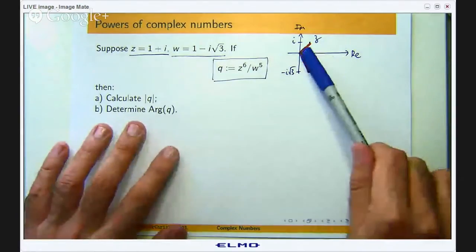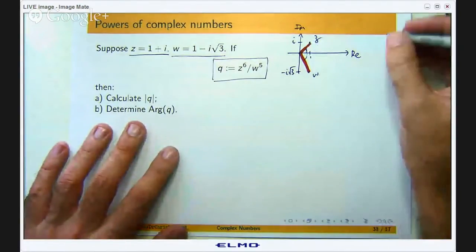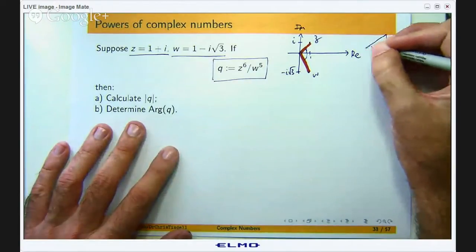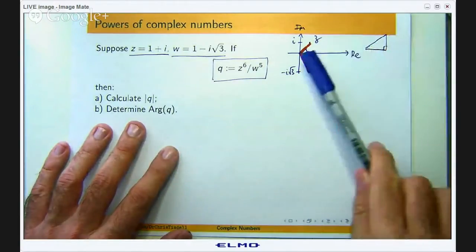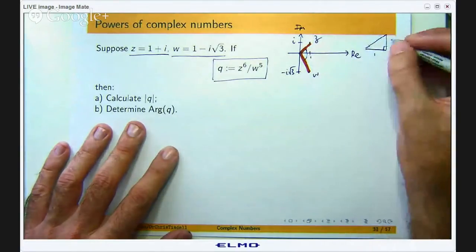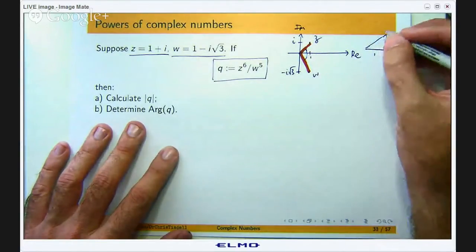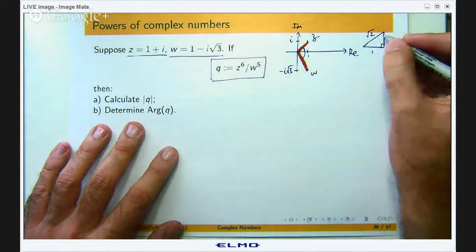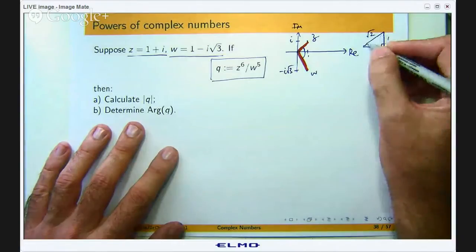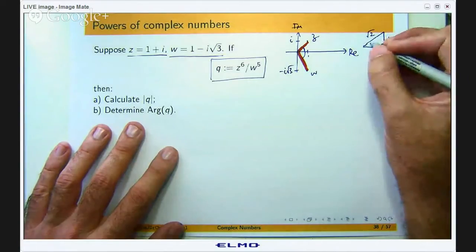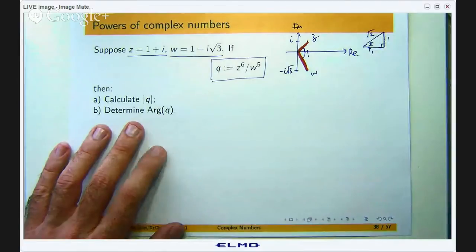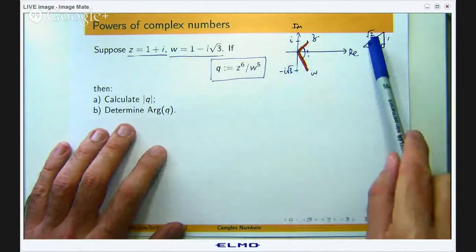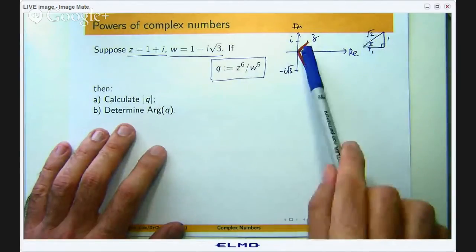If you look here we can have a right angle triangle associated with z. This length is 1, this length is 1. By Pythagoras this length has to be root 2. From basic trigonometry we have got a triangle where these two angles must be equal and they are going to be π on 4. So the length or the modulus is root 2 and the angle to the positive real axis is π on 4.